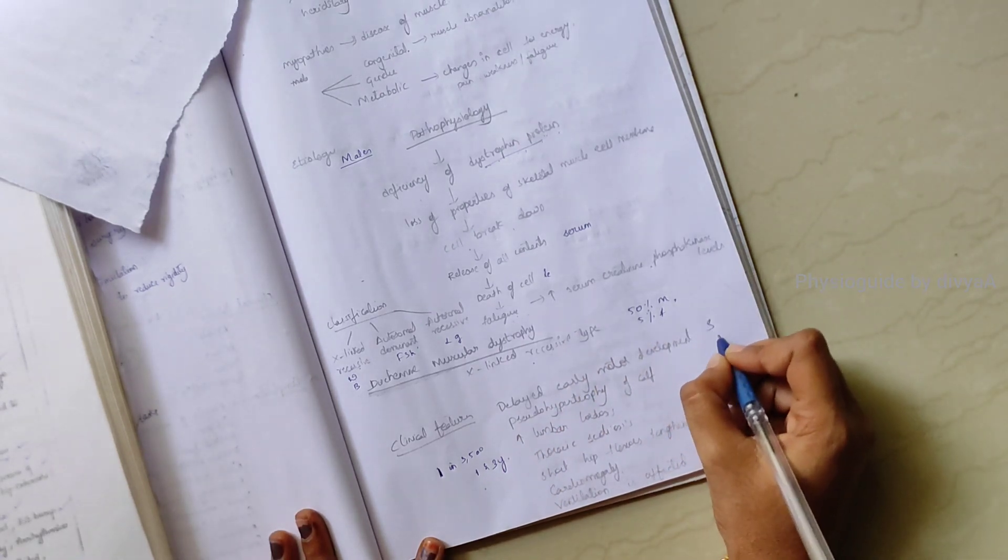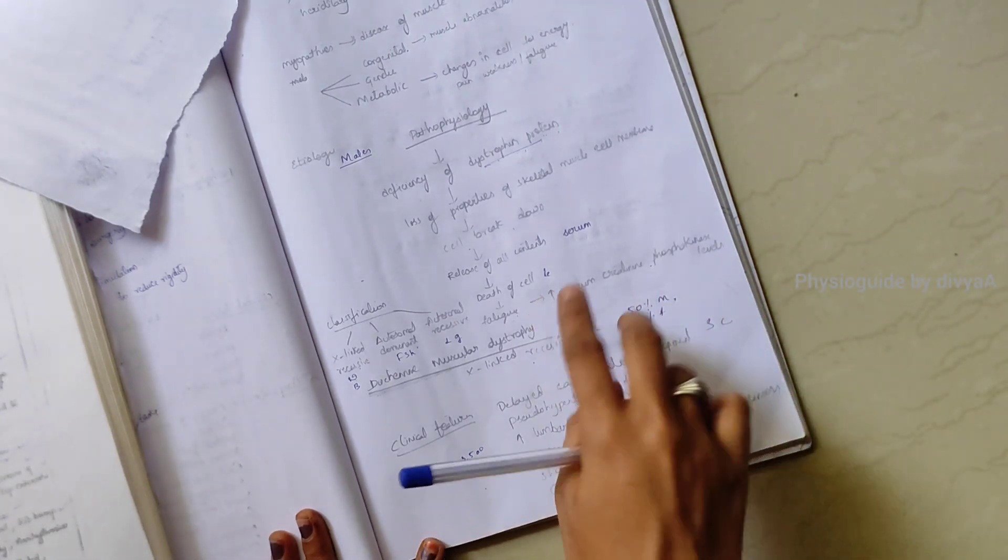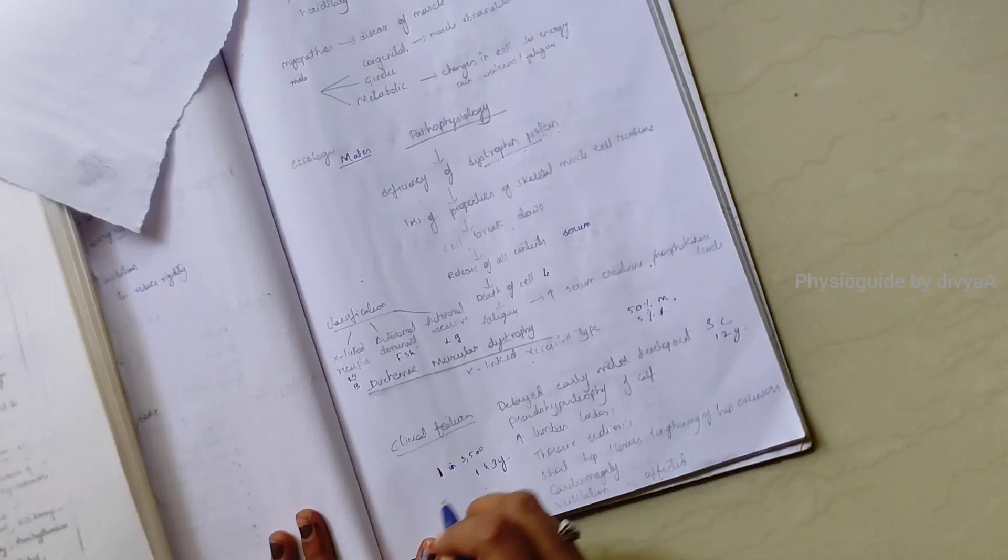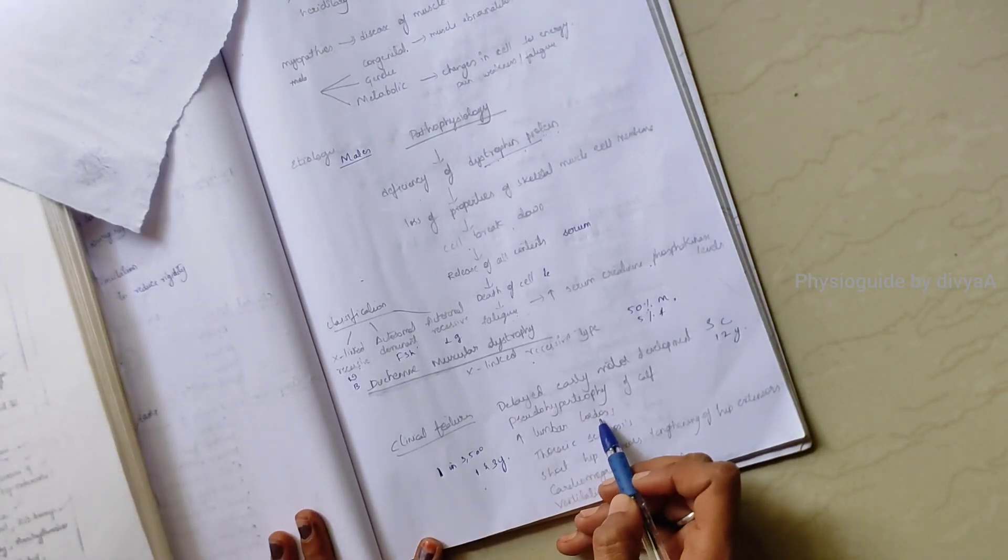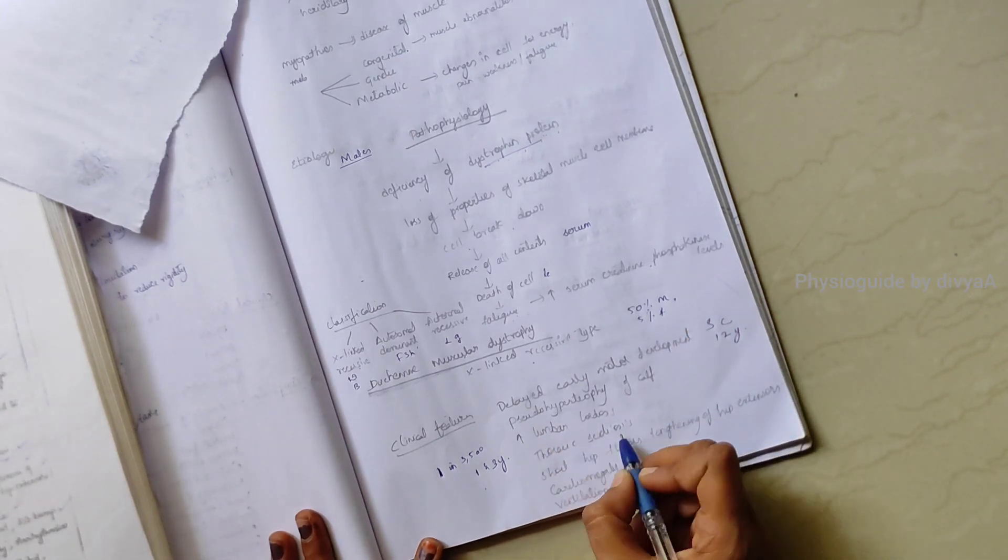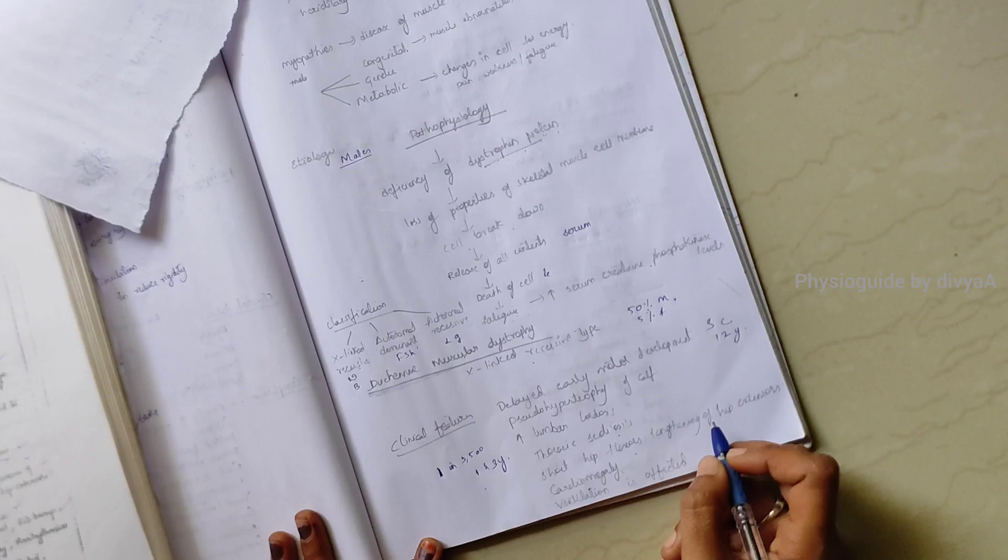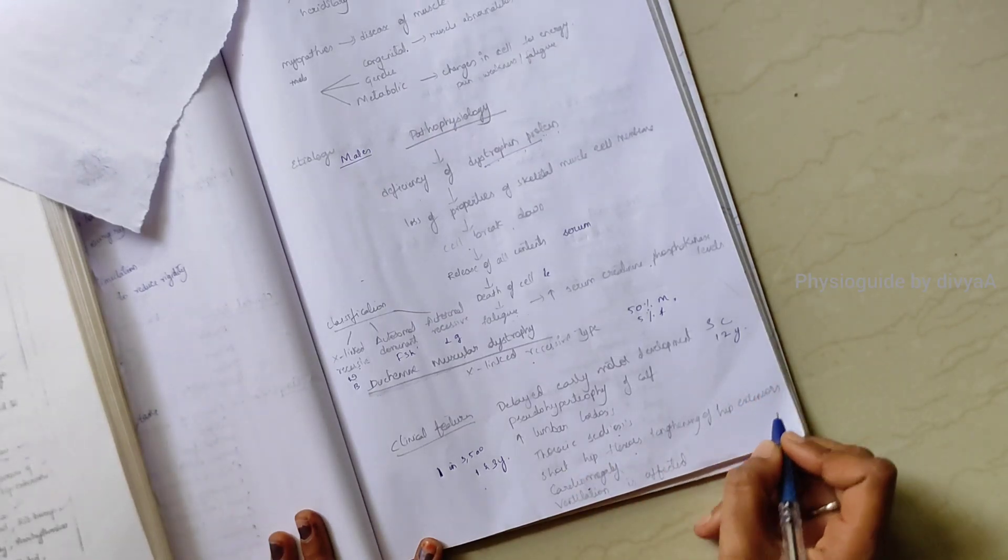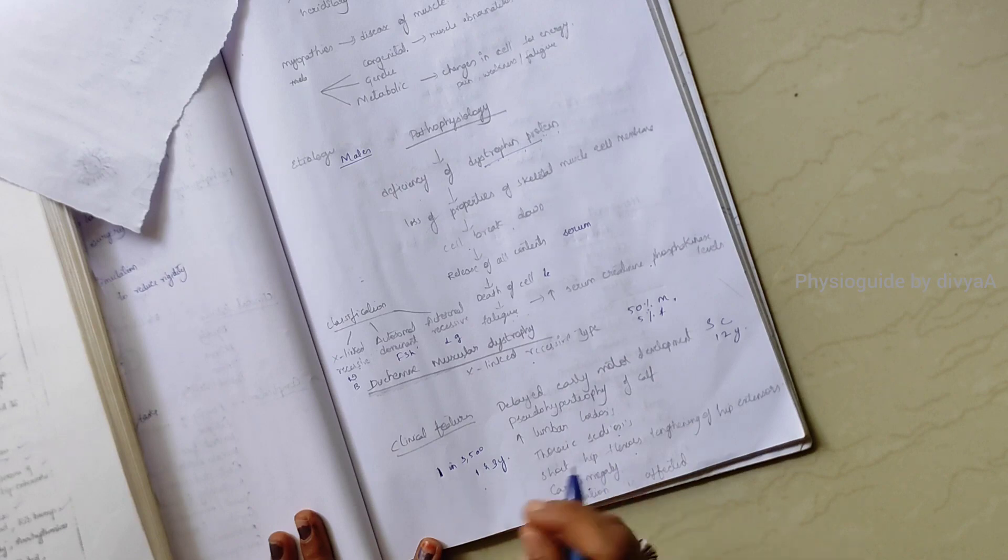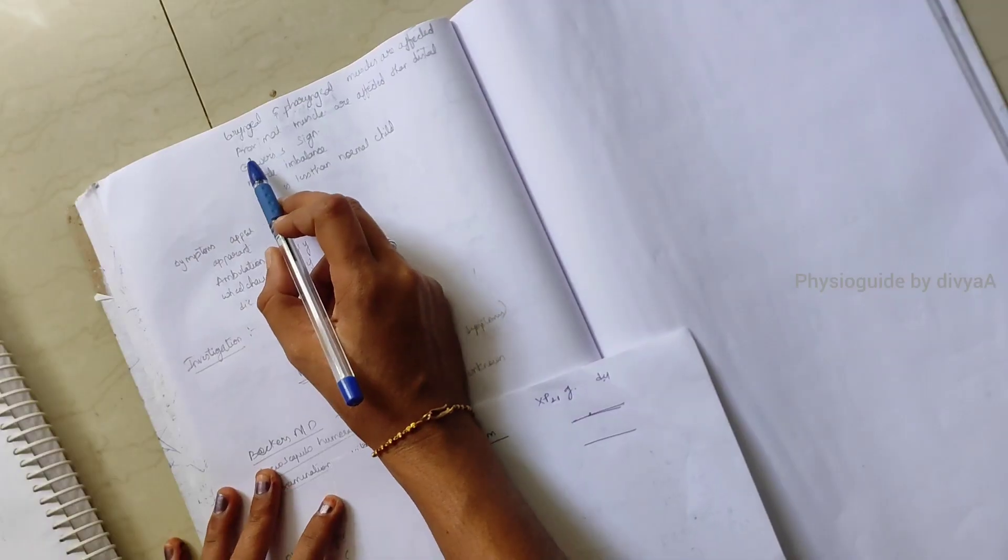Followed by scoliosis, contractures and loss of ambulation - they can't walk at around 12 years of age. Pseudohypertrophy, increased lumbar lordosis, thoracic scoliosis, cardiomegaly. There is shortening of hip flexors and lengthening of hip extensors. Ventilation is affected, breathing pattern becomes poor.